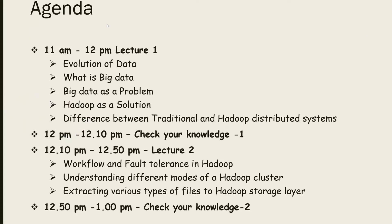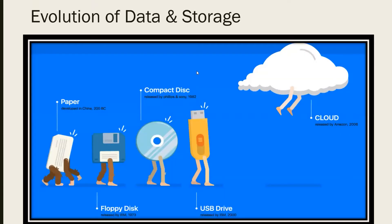The first thing is understanding the evolution of data. People born in the 80s and 90s will have a very good understanding because we've seen both extremes. Initially, data was written only on paper because there wasn't much to convey. Later, when computers came in, we started storing data on disks. In my college days, I did all my project work on floppy disks, and then came compact disks — used to watch movies and store files.